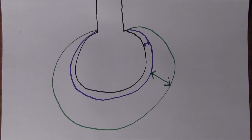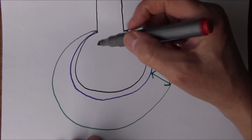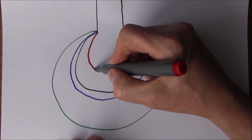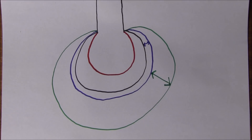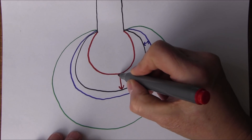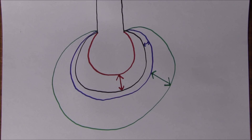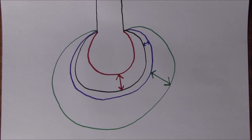We might also want to breathe out as much as we possibly can. We finish breathing out normally, then breathe out as much as possible until we can't breathe out anymore, taking us down to a lower volume of total air in the lungs. This is the expiratory reserve volume — from where we normally stop breathing out to all we can possibly ever breathe out. That's shown by the red line, and it's about 1,200 mils in men and about 700 mils in women. This is the minimum amount of air we can ever have in the lungs in a physiological situation.